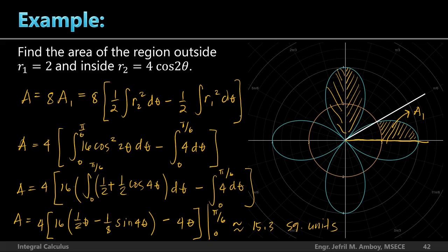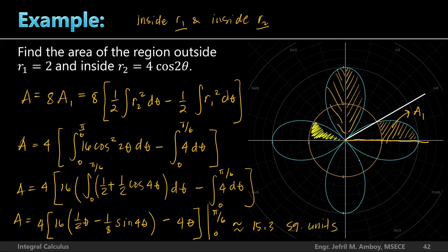As an exercise, you can revise the problem: find the area that is inside R₁ (the circle) and also inside R₂ (the petals) — the area common to both. There are 8 such symmetrical regions. Solve for that area and comment below so we can compare answers with other viewers. If you like this video, don't forget to hit the like button and subscribe to my YouTube channel. You may also share this video with your friends as a way of supporting the channel. Thank you for watching!